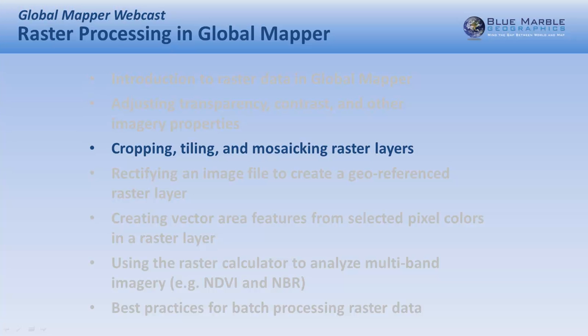In our next section we're going to look at physical modifications that can be applied to imagery: specifically cropping, tiling, and mosaicing. Cropping means taking a large file and limiting its extent. Tiling is taking a large file and breaking it into more manageable sizes — that can be initiated during the export process. As for mosaicing, there's not really a great deal to discuss because it happens automatically. If your workflow requires you to take multiple files and merge them into a single seamless file, simply export — by default Global Mapper will export all loaded data in a single file.